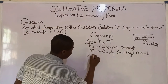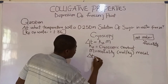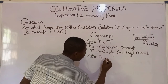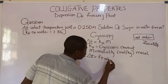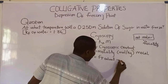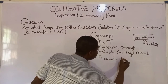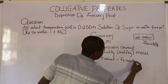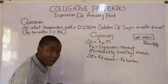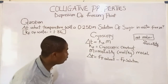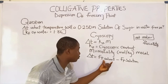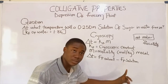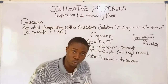What is delta t? Delta t is simply the freezing point of solvent minus the freezing point of solution. It must be noted that the freezing point of solvent is always higher than the freezing point of solution.